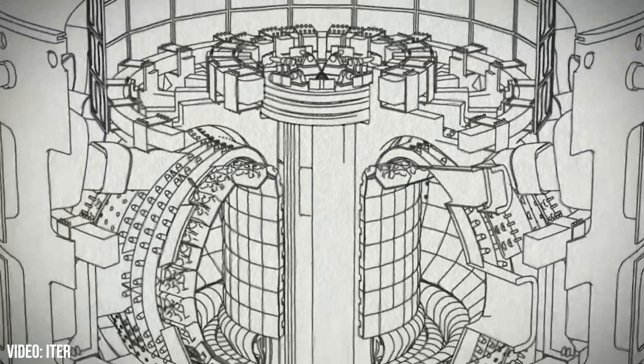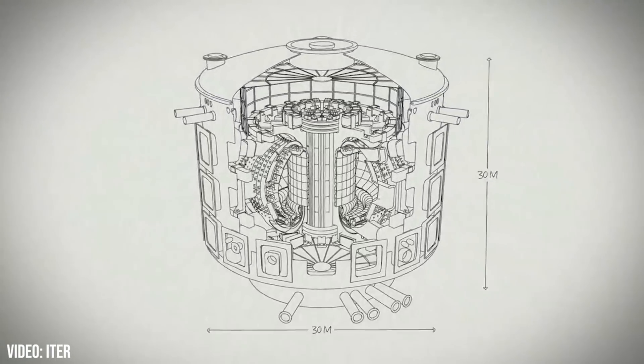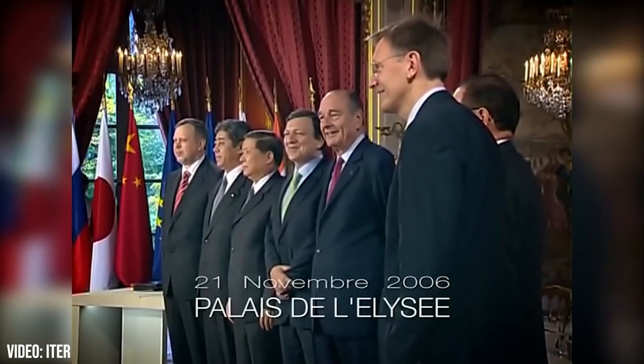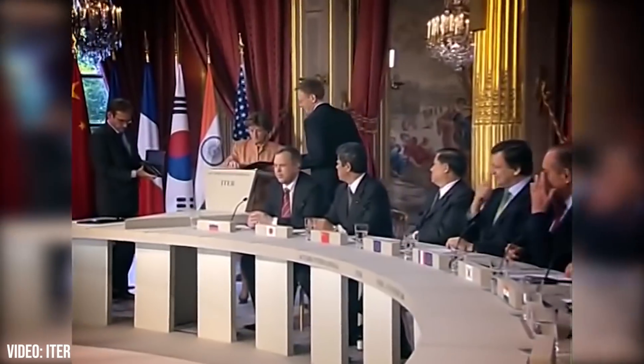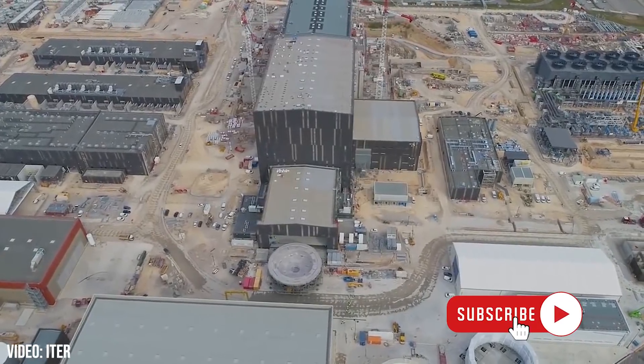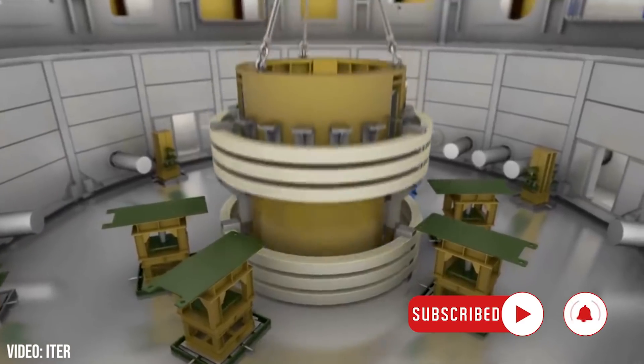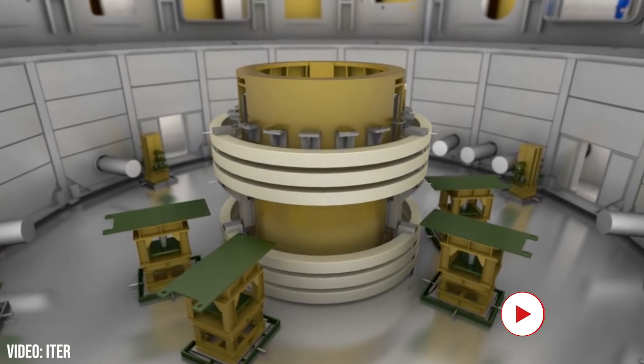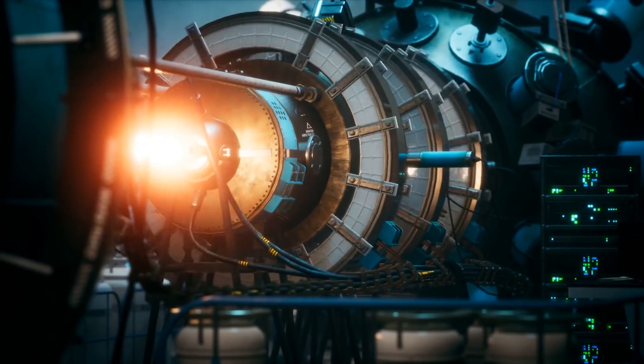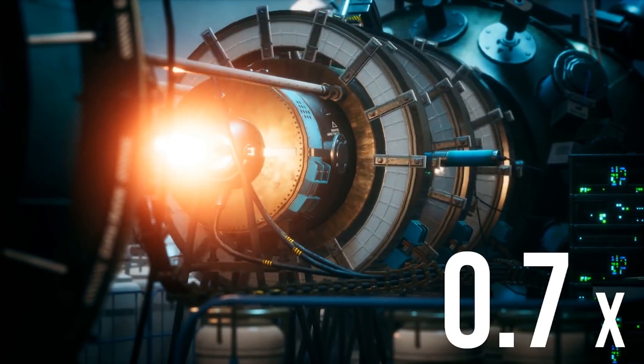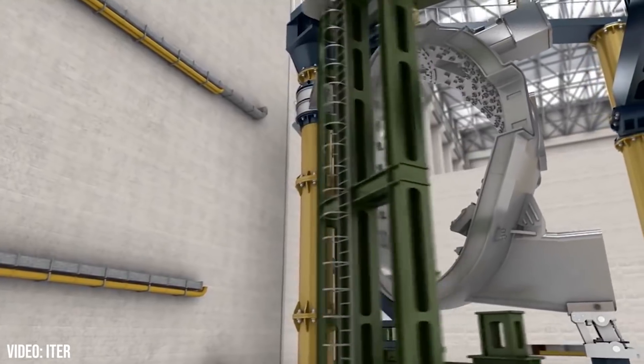ITER is set to be the world's largest nuclear fusion experimental system, and is drawing upon the expertise of 35 nations all around the world. Not only does it aim to produce the most energy of any nuclear reactor, it also wants to output 10 times more energy than it consumes. For reference, the current record for this is 0.7 times the input energy.